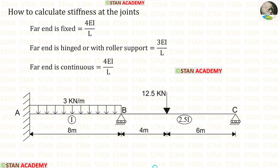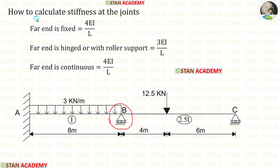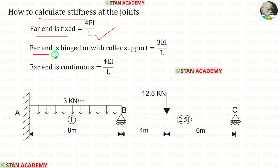In the moment distribution method, we have to find the distribution factor, and we do this only at joints. In this analysis, there is only one joint: joint B. To find the distribution factor, we calculate the stiffness. If the far end is fixed, the formula is 4EI/L. If the far end is hinged or has a roller support, the formula is 3EI/L. If the far end is continuous, the formula is 4EI/L.